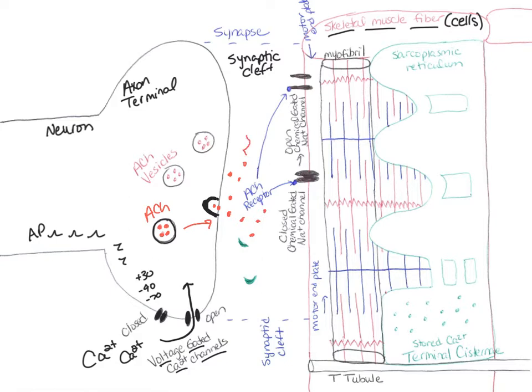Some of these ACh molecules will float away and move away from the synaptic cleft, but a lot of them are going to move across the synaptic cleft and bind to receptors on that skeletal muscle. Where that axon terminal comes into contact with that skeletal muscle, we call that the motor end plate. Not all areas of the skeletal muscle are going to be a motor end plate — only where that axon terminal comes in contact with it.